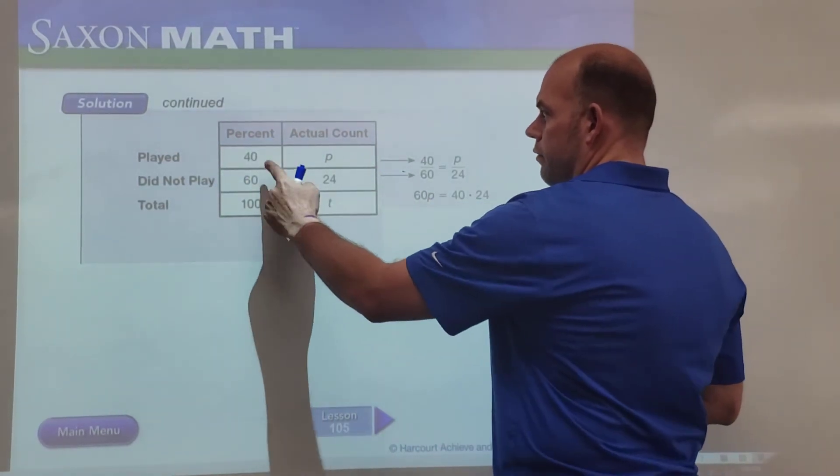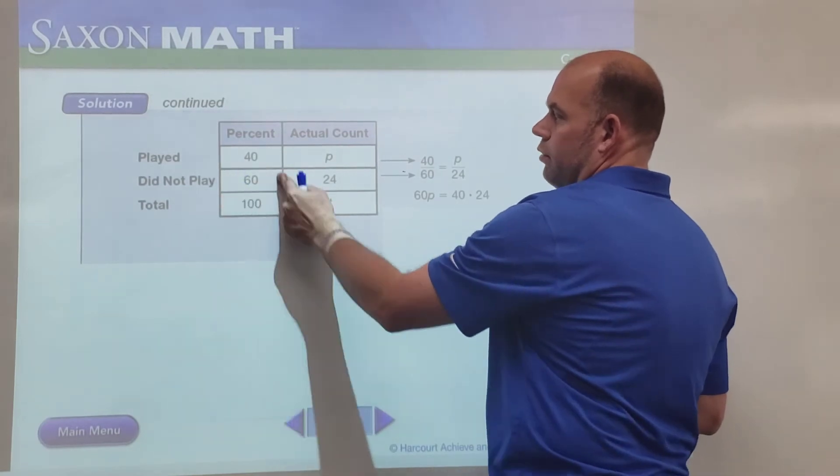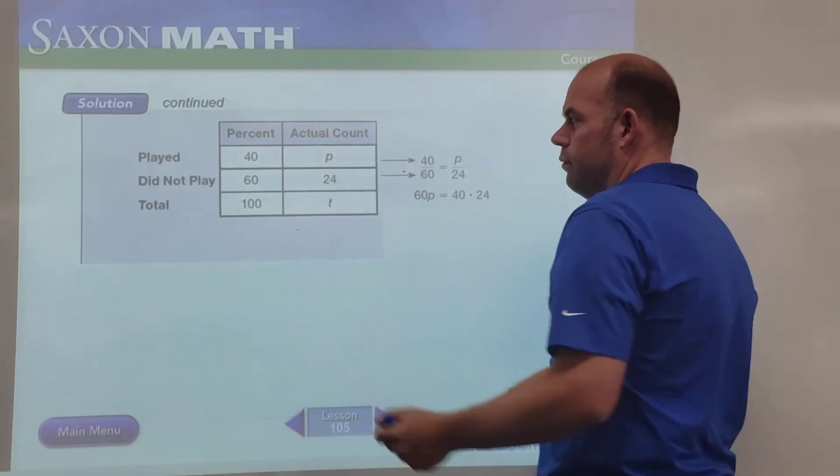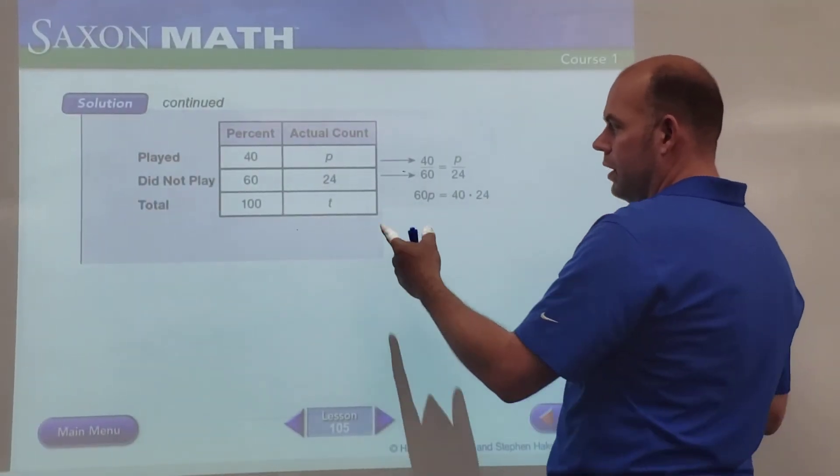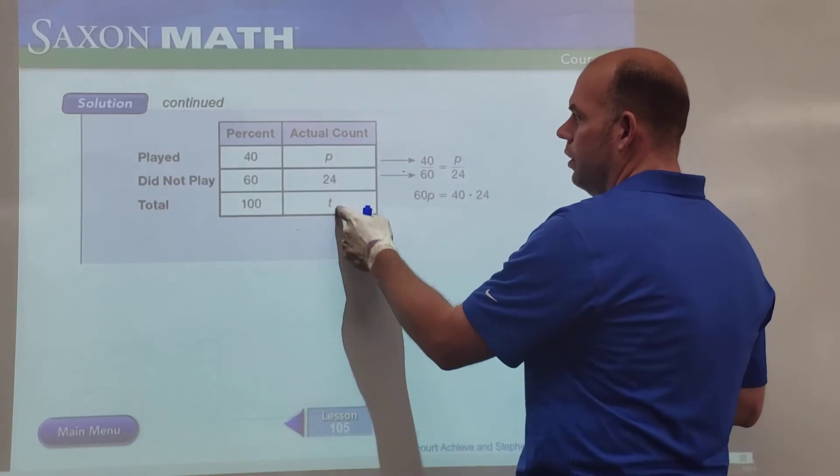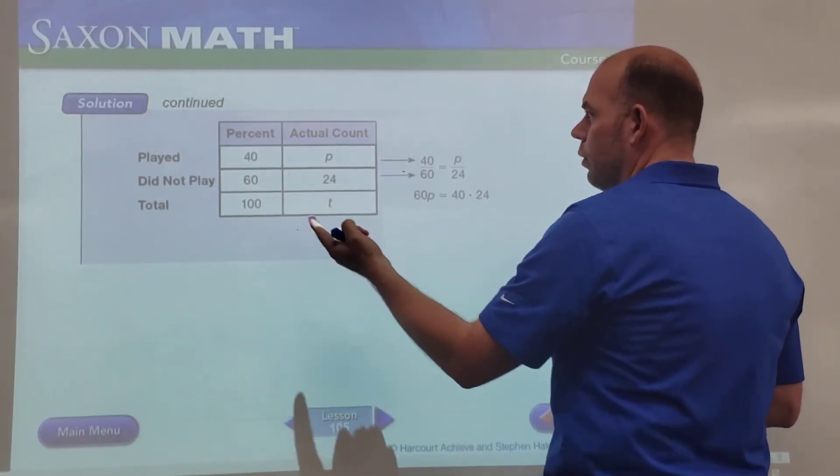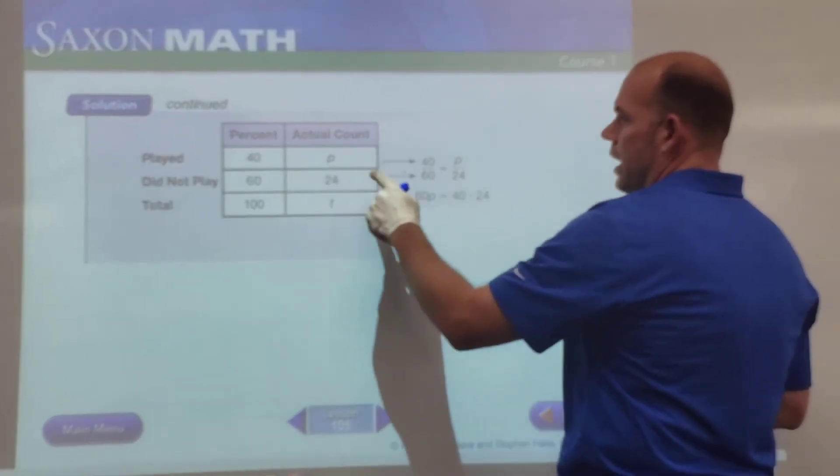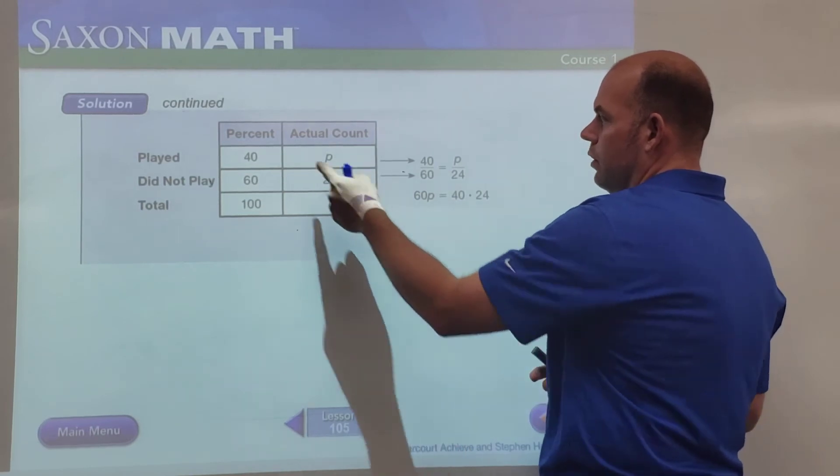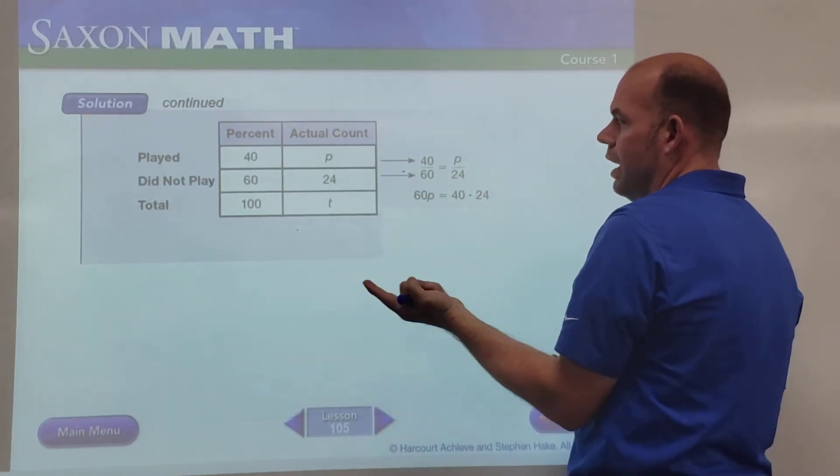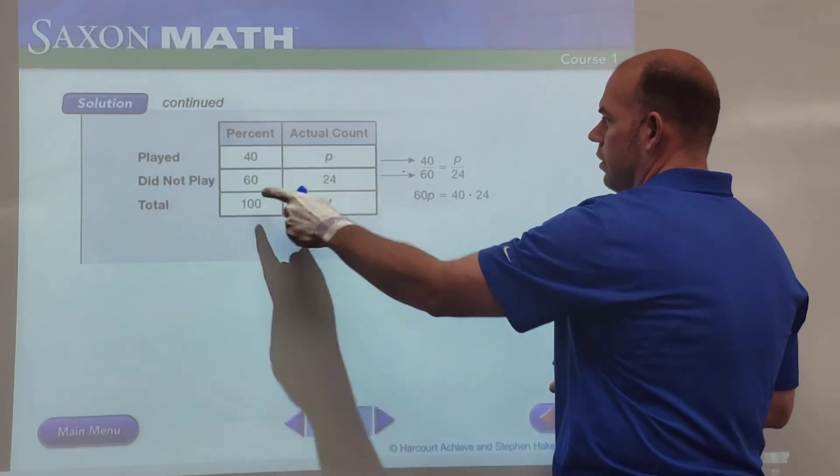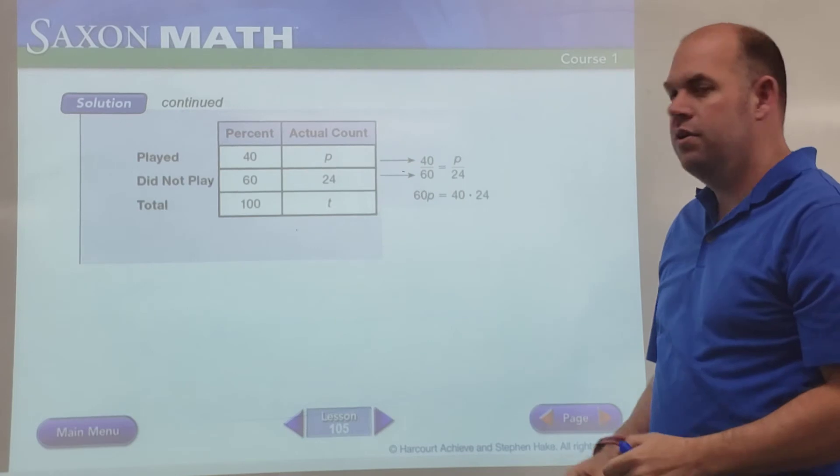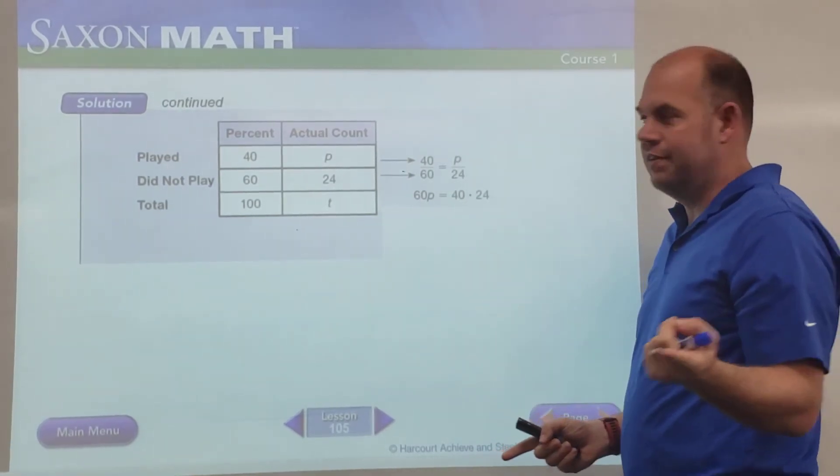They told us we had 40% that played, so out of 100. So we know that those that did not play is 60%, and then they told us those that did not play was 24. So we've got that number. So now it's hard because we have two unknown numbers here, but again we have two that are known, so we'll use what is known—this 60 and 24. And if we're going to try to solve for p, then we would go with 40 over p. Now we could put it 60 over 100 and 24 over t to solve for t, but right now we're solving for the number of those who actually played.